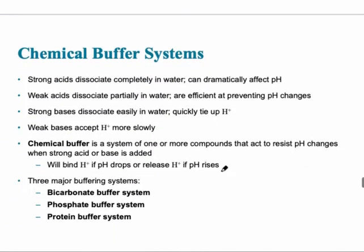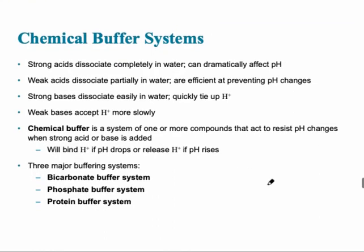For the chemical buffer systems, there are three examples. The main one is called the bicarbonate buffer system, the phosphate buffer system, and the protein buffer system. A buffer system is a system of one or more compounds, usually with an acid and a base, and its job is to bind up hydrogen if the pH drops or release hydrogen if the pH rises.